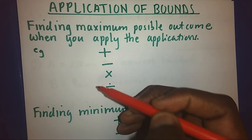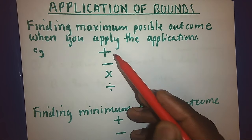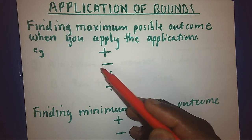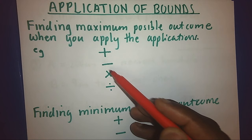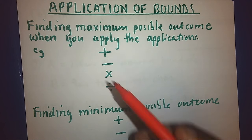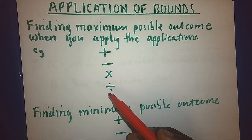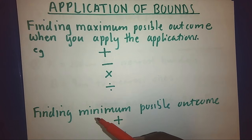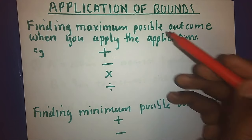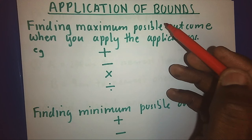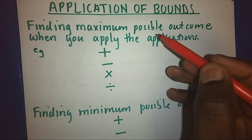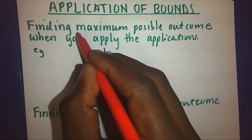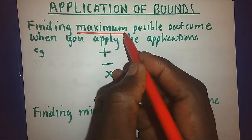That is: addition, subtraction, multiplication, and division. Normally, bounds help us to find the maximum possible outcome and the minimum possible outcome.